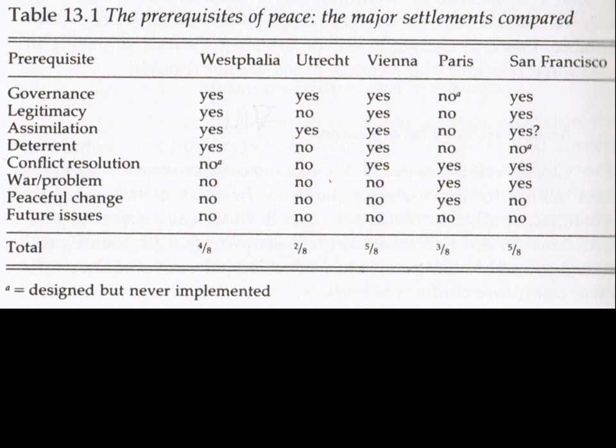Was war seen as a problem? It became to be seen as a problem particularly after the end of the First World War and the Second World War because of the scale of the violence. Do these treaties have mechanisms for peaceful change — can they be altered? None of these treaties, except for Paris, had provisions to be changed. And in terms of future issues, none of the treaties addressed future issues. So an interesting paper would be to study whether the structure of the treaty had an effect on the subsequent likelihood of a lasting peace.